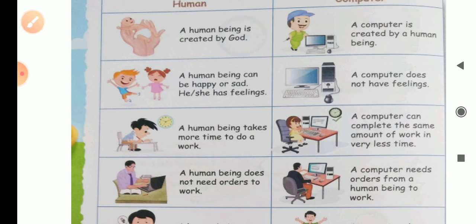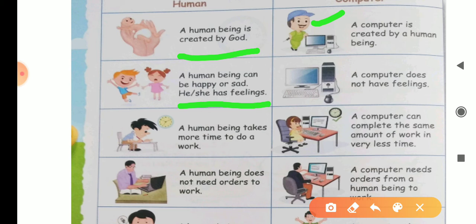A human being is created by God and a computer is created by a human being. A human being can be happy or sad. He or she has a feeling. Dear students, when you are scolded, then you are sad. But when the mother loves you, how are you? So happy. It means you have feelings. So human beings have feelings. But a computer doesn't have feelings.